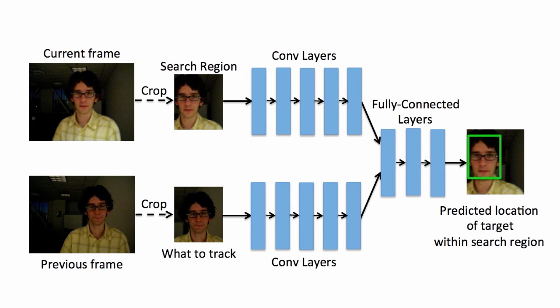Let's look at the internal architecture. The two cropped frames are fed into a bank of convolutional layers followed by three fully connected layers, which terminate in an output layer consisting of four numbers. These four numbers are the top left and the bottom right coordinates of the bounding box.